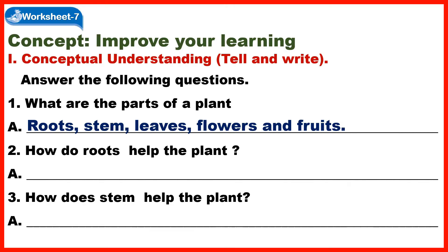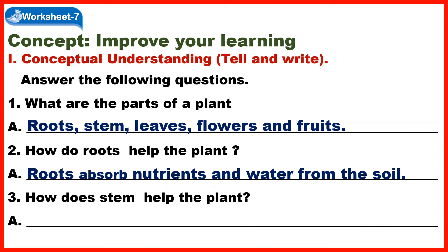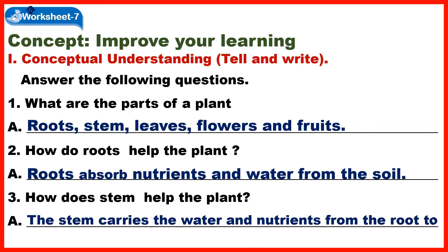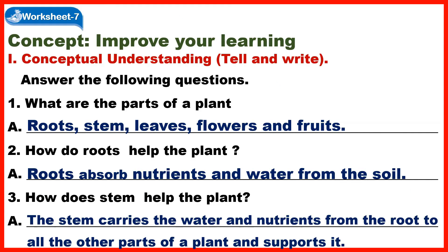Question 2: How do roots help the plant? Answer: Roots absorb nutrients and water from the soil. Question 3: How does the stem help the plant? Answer: The stem carries water and nutrients from the root to all other parts of the plant and supports it.